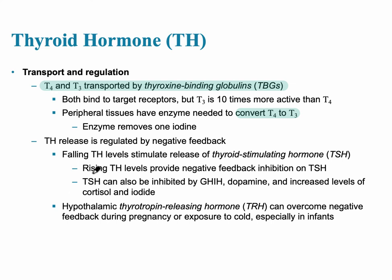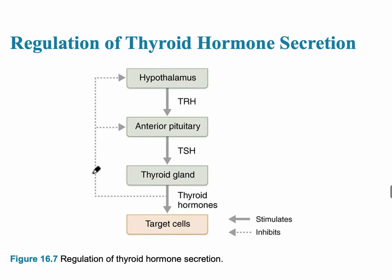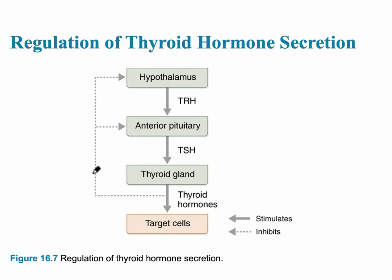Thyroid hormone is regulated by negative feedback. If there is a low amount of thyroid hormone, a feedback signal is sent to the thyroid gland, the anterior pituitary, or the hypothalamus, prompting them to release hormones that correct thyroid hormone levels. This negative feedback loop ensures the body maintains the appropriate amount of T3 and T4.